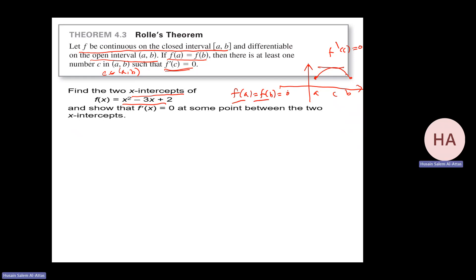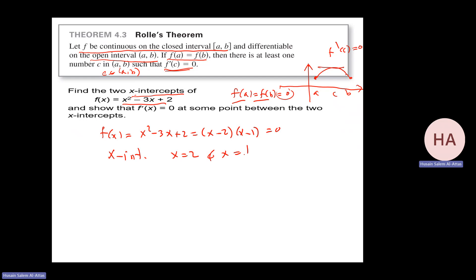In this case, the x-intercepts are x equals 1 and x equals 2. So we have the points (2, 0) and (1, 0) as the x-intercepts. I have f(a) at a equals 1 and b equals 2.